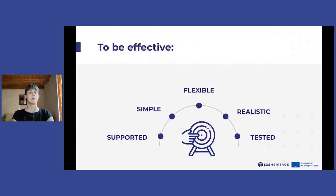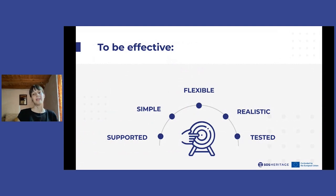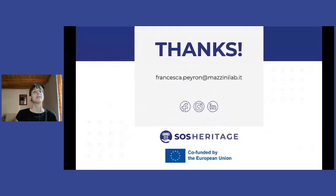In this last slide, we will look at some of the fundamental elements that an emergency plan should have to be effective. First of all, it needs to be actively supported by the director, the governing body and all levels of staff. Secondly, it should be simple, focusing mainly on situations that are most likely to occur. Thirdly, it should be flexible enough to accommodate unanticipated situations and realistic in its assessment of the museum's resources. And lastly, it should be tested regularly and at least annually with an emergency exercise and briefing. So that's it for the second part of this lesson. Thank you very much for your attention and we will see you in part three.